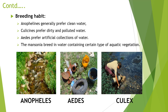Next is breeding habitat. Anopheline generally prefers clean water. Culicine prefers dirty, stagnant, and polluted water — favored by the Culex mosquito. Aedes mosquito prefers artificial collections of water; because of this, the Aedes mosquito is also called the container mosquito, as it breeds in artificial containers like nutshells, tires, broken buckets, etc. Mansonia breeds in water containing certain types of aquatic vegetation. Remember: Culex breeds in stagnant and dirty water, Aedes is a container mosquito breeding in artificial collections of water, and Anopheline prefers clean water.